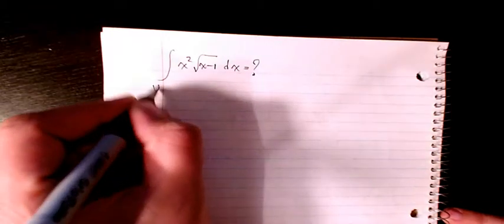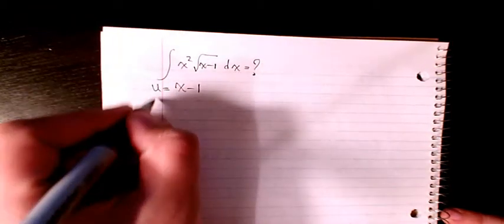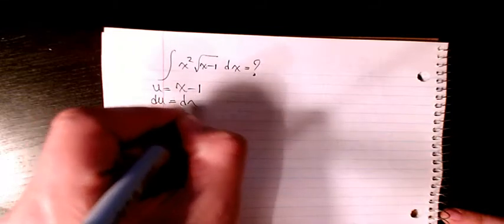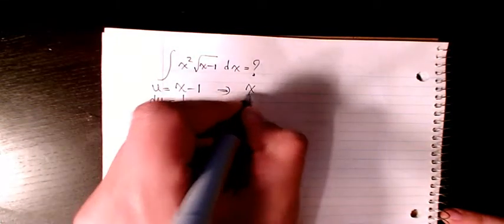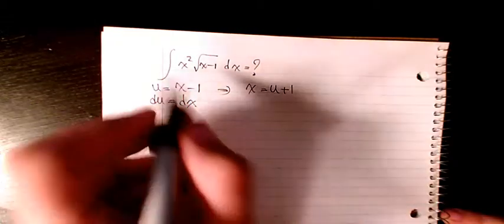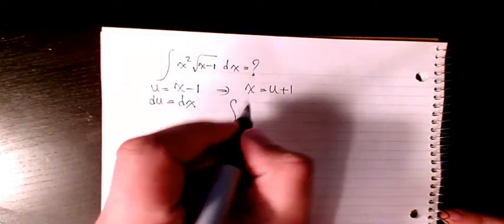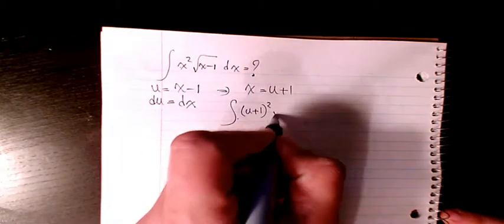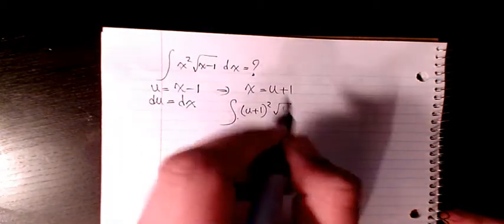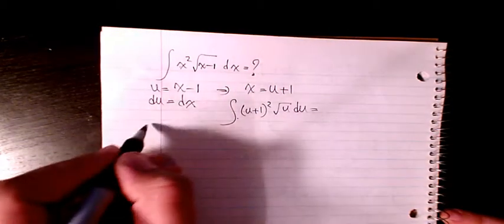So I can say u is equal to x minus 1, du will be equal to dx. So I can say x will be equal to u plus 1. So I change x squared to u plus 1 squared, this one is going to be square root of u, and dx will be du.